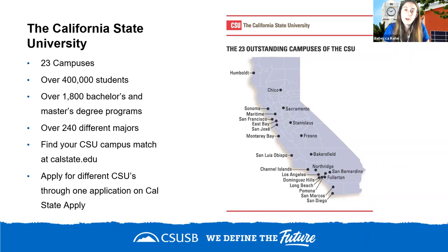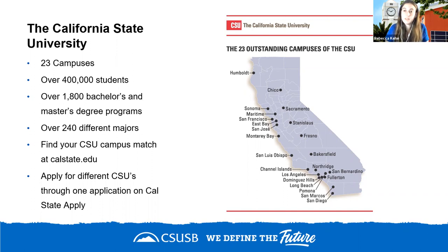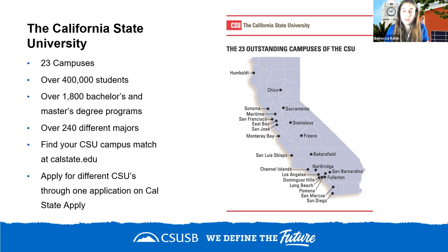CSUSB is part of the California State University system. There are 23 campuses in the CSU system that grant bachelor's and master's degrees. We are public institutions, like the UCs, but the main difference is that the UC system grants doctorate degrees — including MDs and JDs — while the CSU system only grants bachelor's and master's degrees.